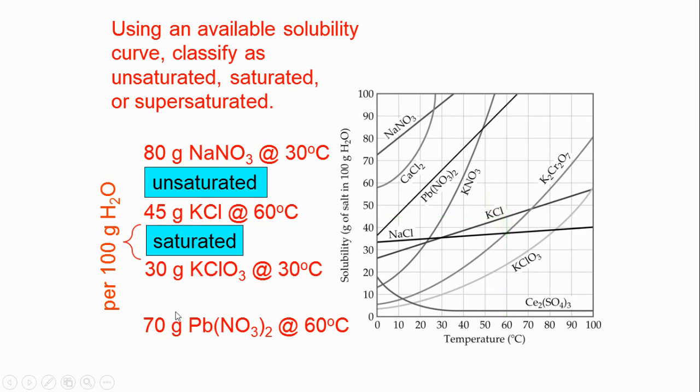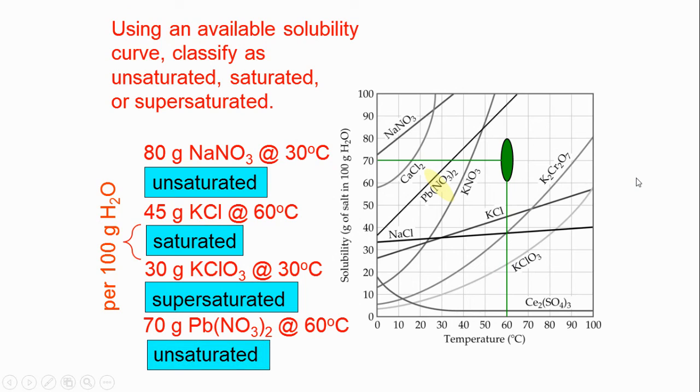Let's try another one. We have 30 grams of potassium chlorate at 30 degrees Celsius. So find 30 degrees Celsius, and go up to 30 grams, and make a little dot right there. Now, let's find our potassium chlorate. Potassium chlorate is right down here. We are clearly above that line, so we must have a super-saturated solution. Let's try one more. In the last example, we have 70 grams of lead-2-nitrate at 60 degrees Celsius. 60 degrees Celsius, go up to 70 grams, make a little dot. Now find the lead-2-nitrate right over here. Here's the line for lead-2-nitrate. We are below that point, so it is unsaturated. Excellent.